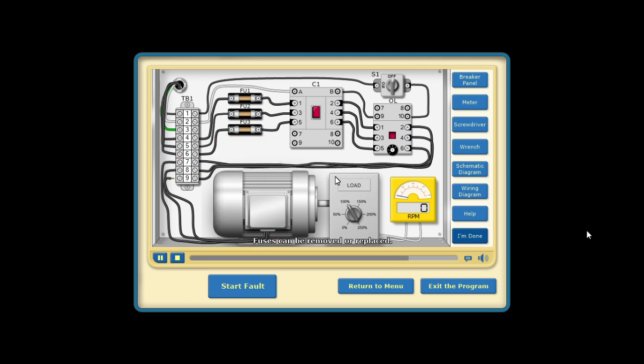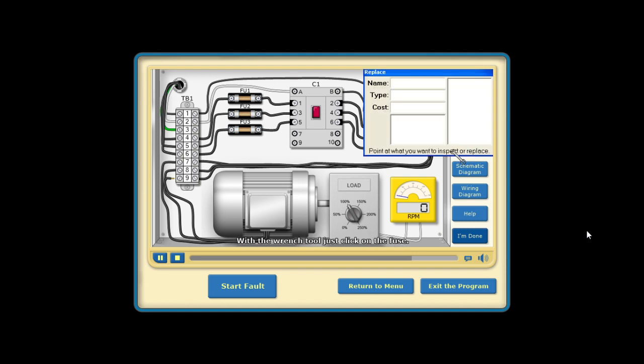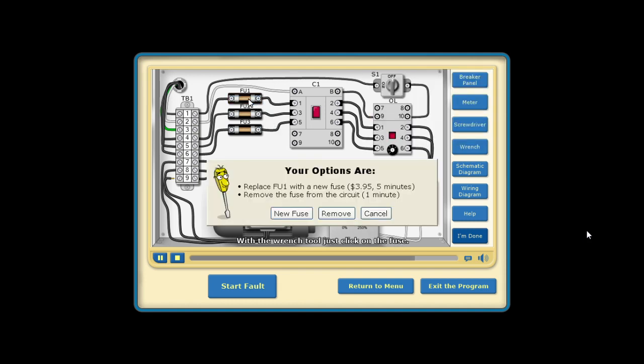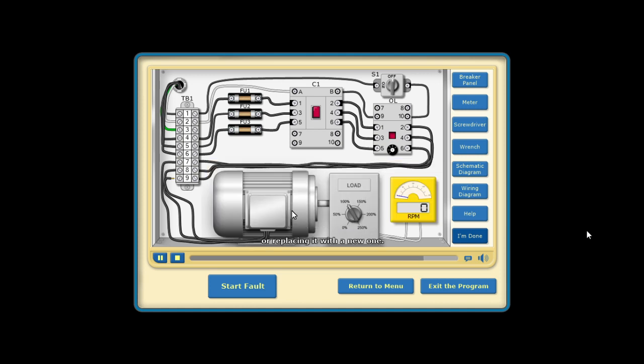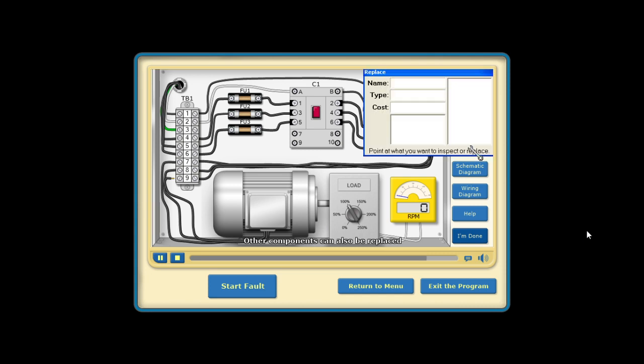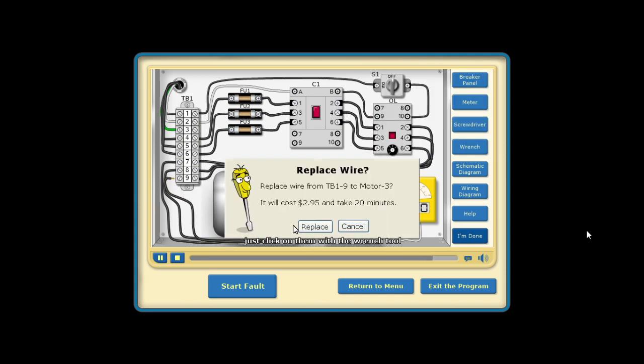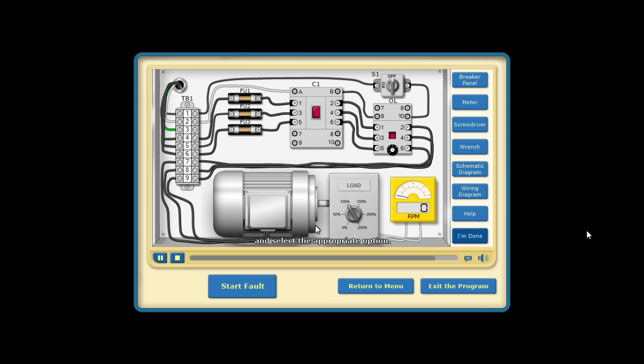Fuses can be removed or replaced with the wrench tool, just click on the fuse. You will have the option of removing it or replacing it with a new one. Other components can also be replaced. Just click on them with the wrench tool and select the appropriate option.